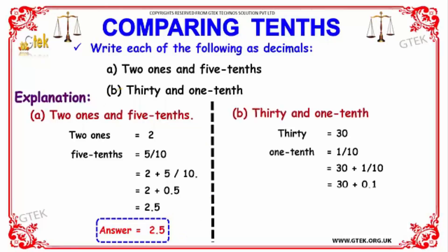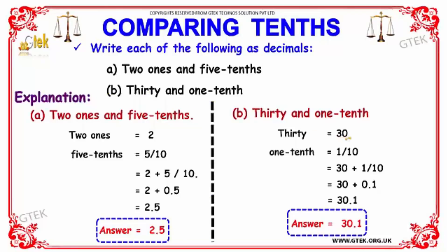For 30 and one tenth: 30 is written as 30, and one tenth is 1/10, represented as 0.1. Adding 30 + 0.1 gives an answer of 30.1. This is how each decimal is converted to obtain an answer.